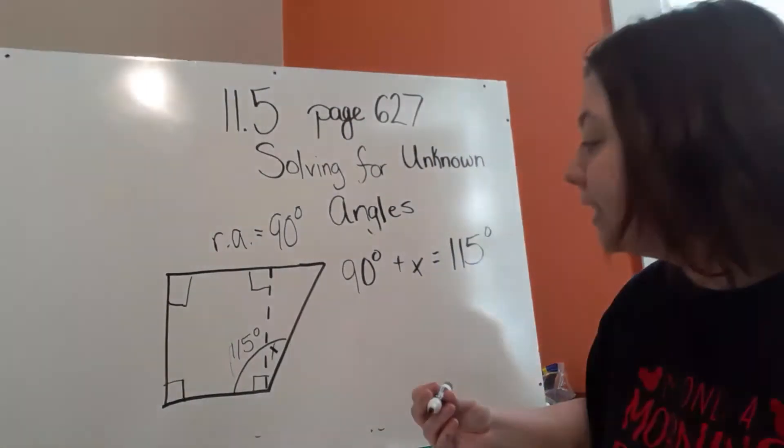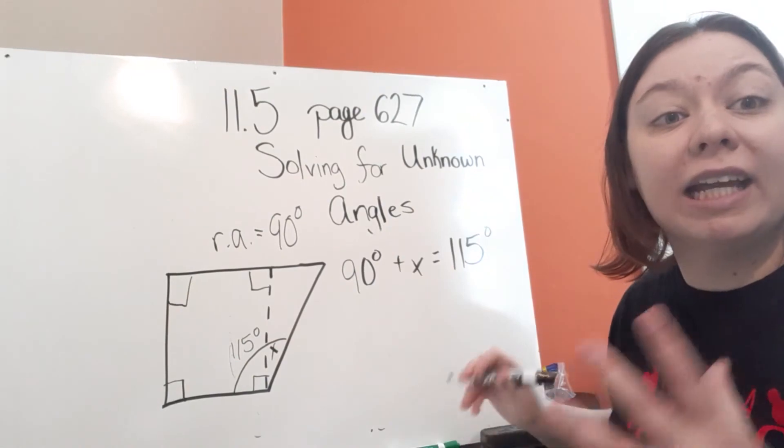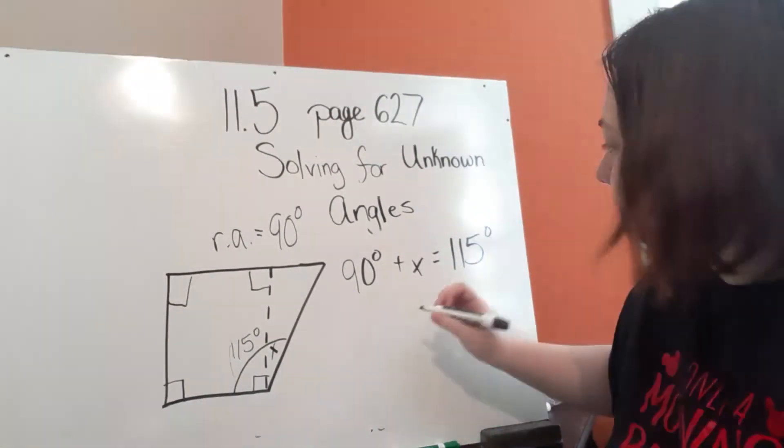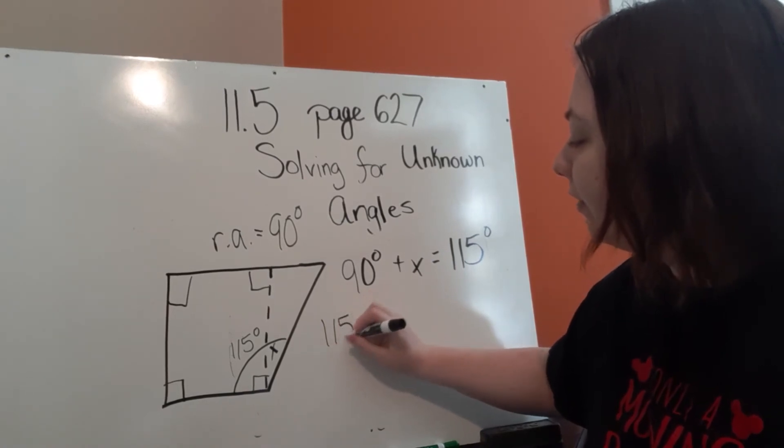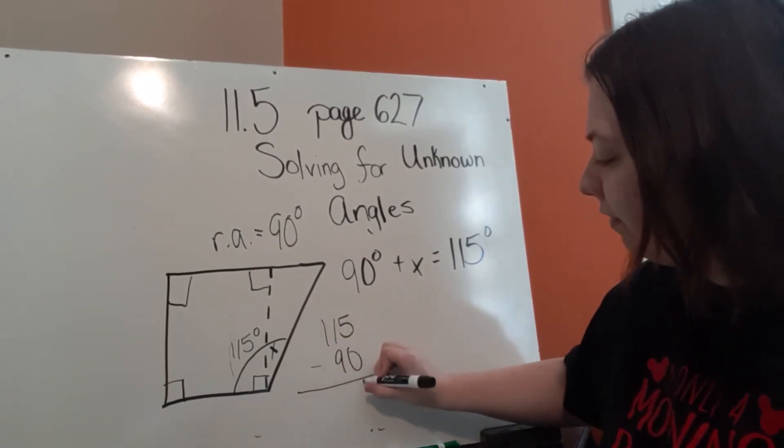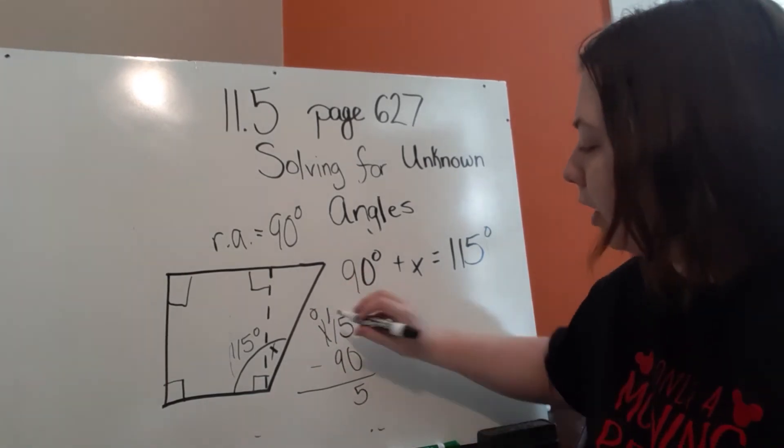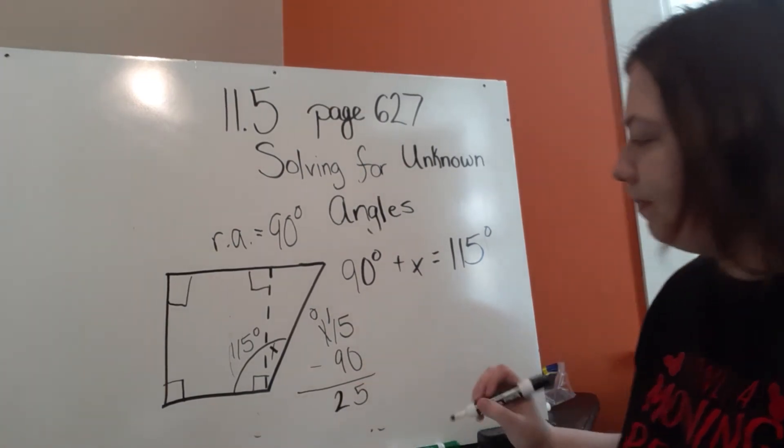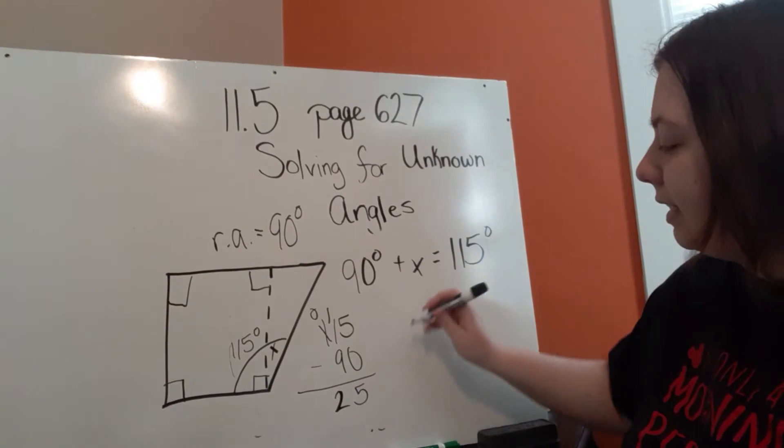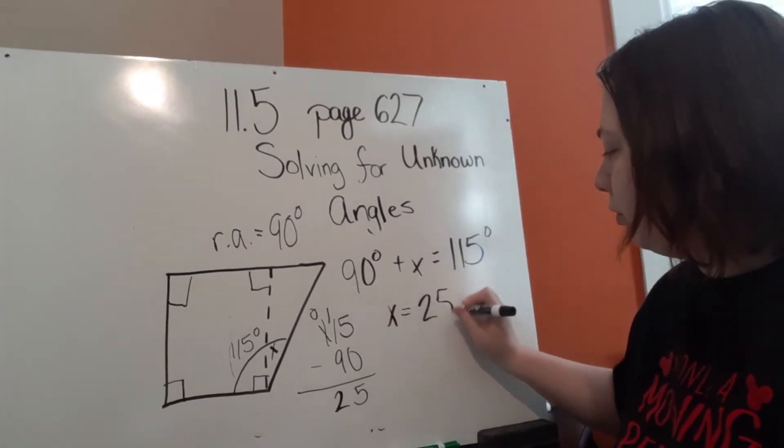Again, it doesn't make sense for me to add the 90 to 115. 90 is part of it. So I need to subtract it. So 115 minus 90. I've got 5 minus 0. I need to borrow. 11 minus 9 is 2. So 115 minus 90 equals 25. That means that X equals 25.